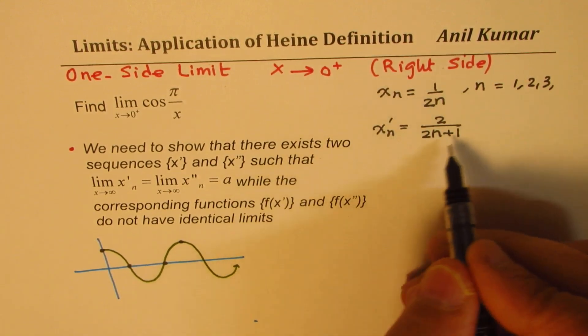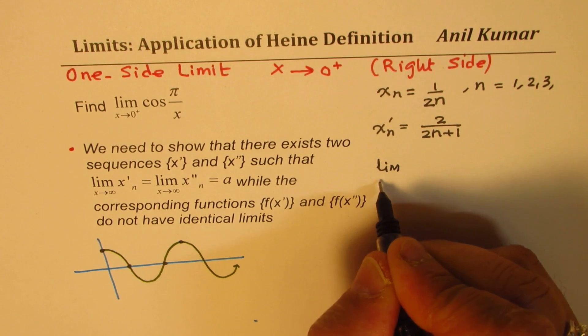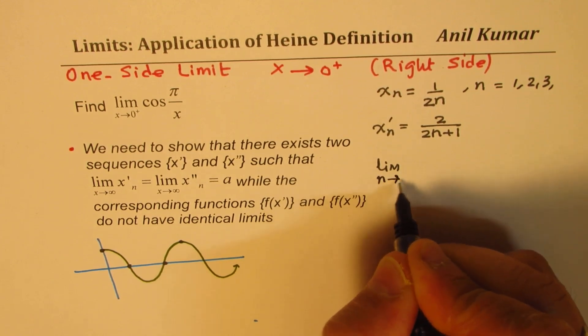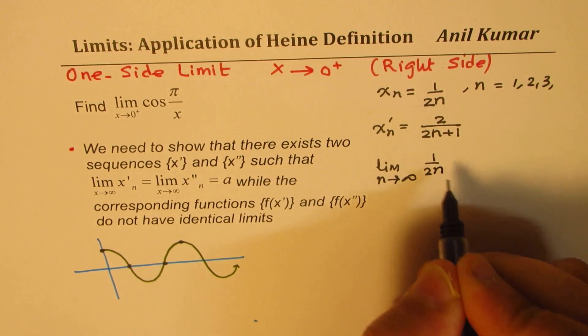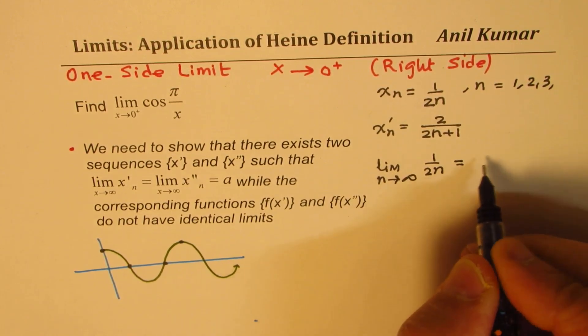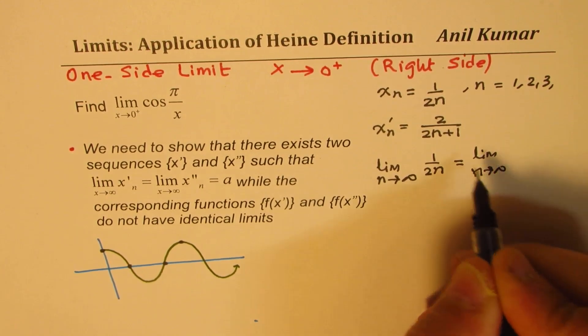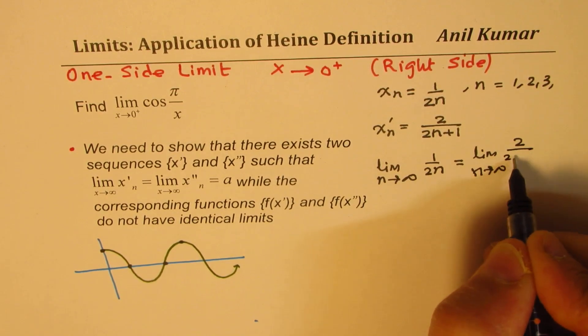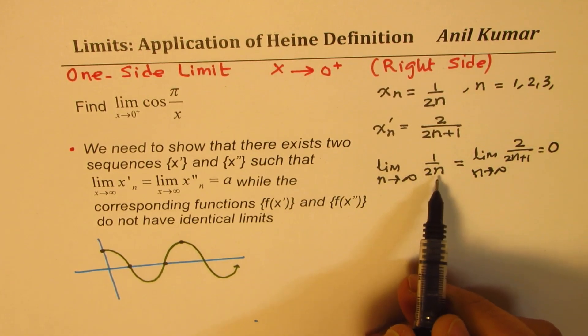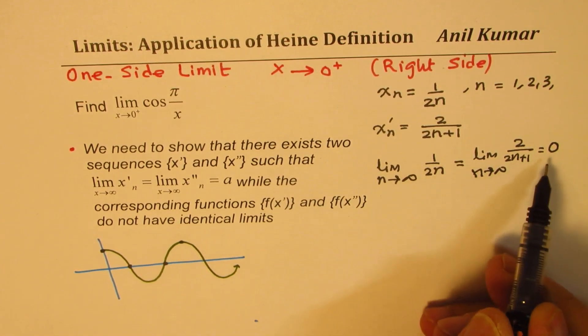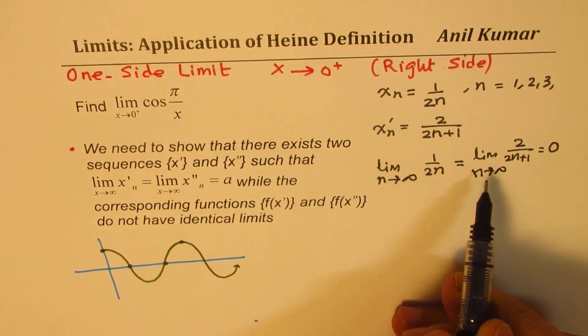Now for these functions, what we know is that the limit as n approaches infinity for 1 over 2n is same as the limit as n approaches infinity for 2 over 2n plus 1 and both are 0. If n is very large, dividing by a large number will give you 0. So both these limits are the same.